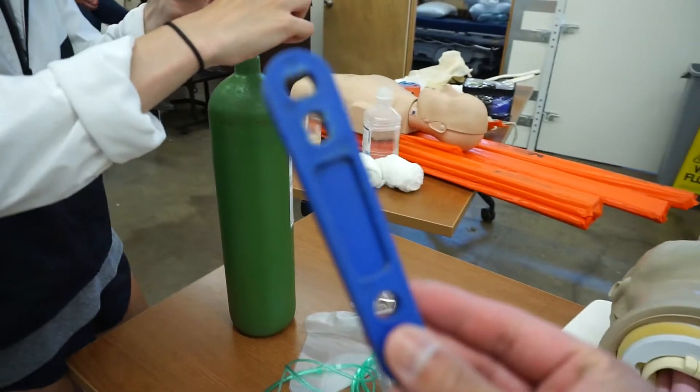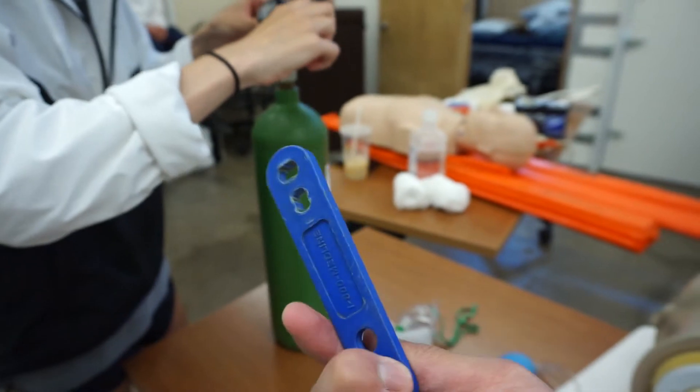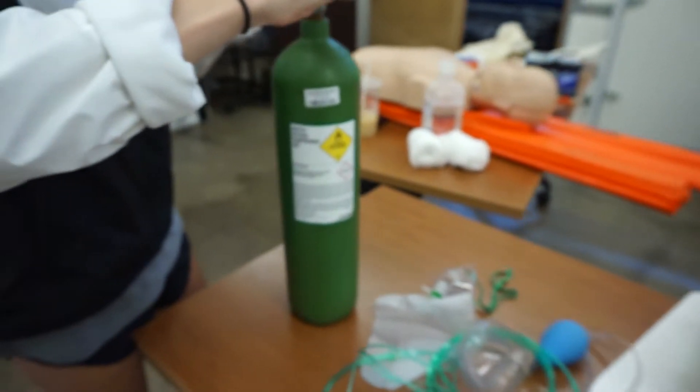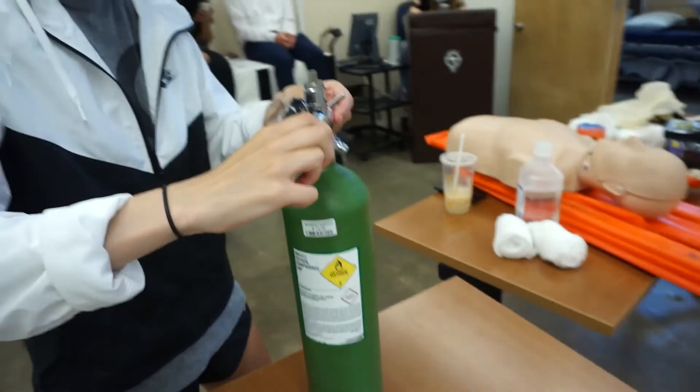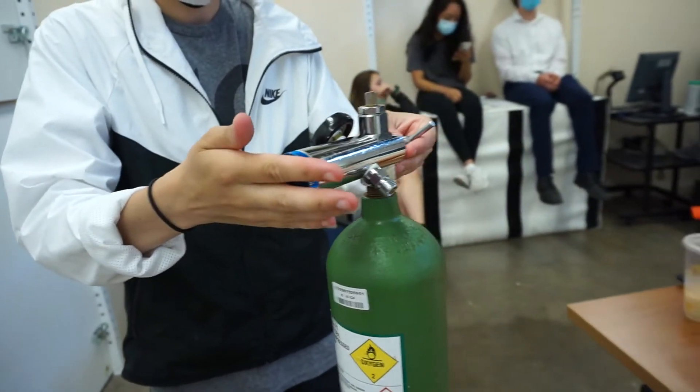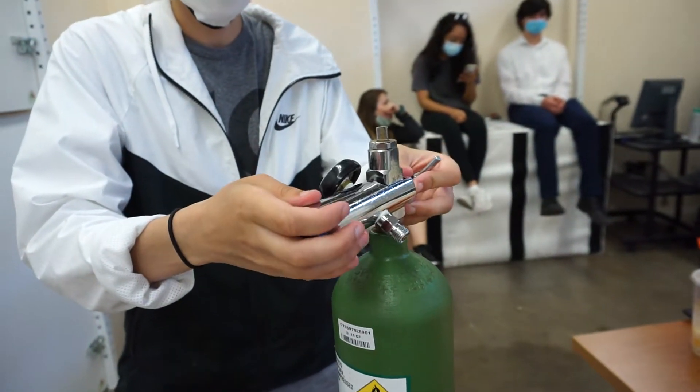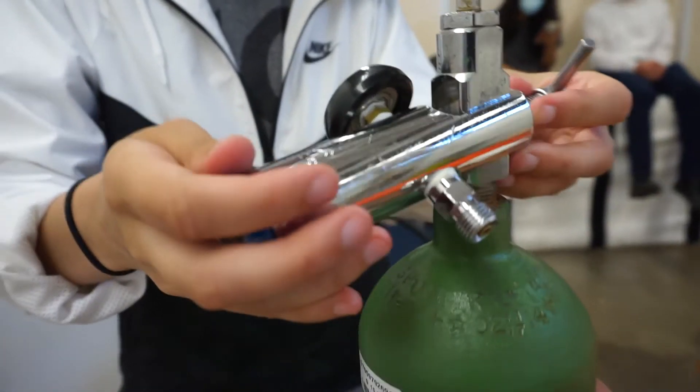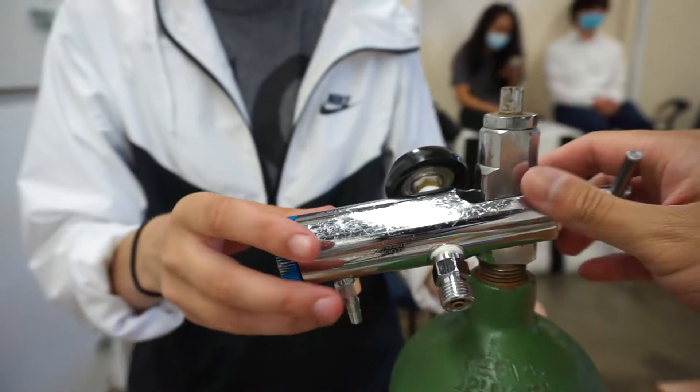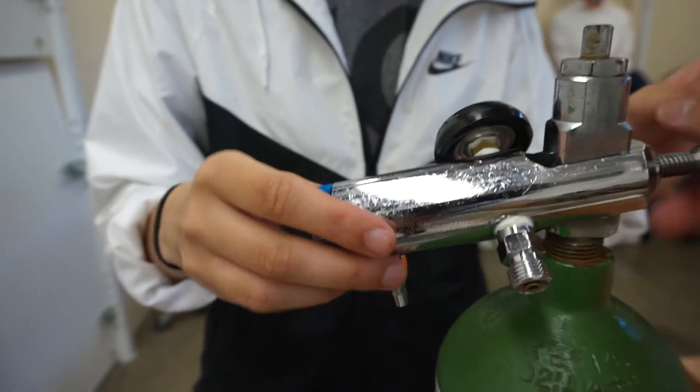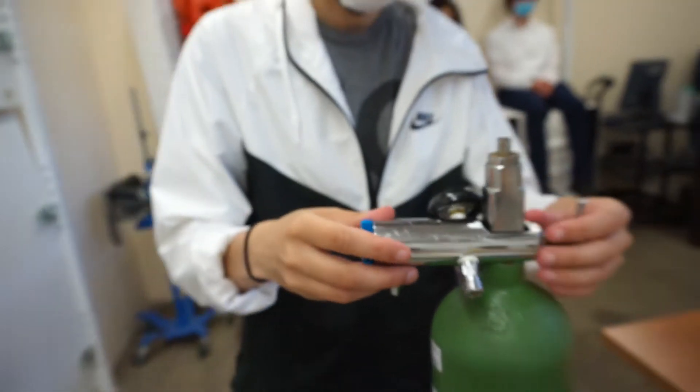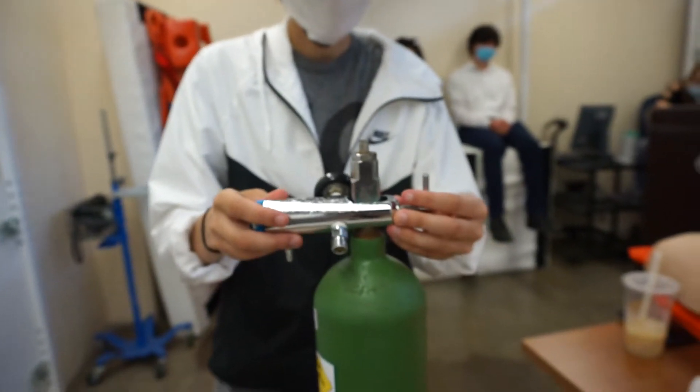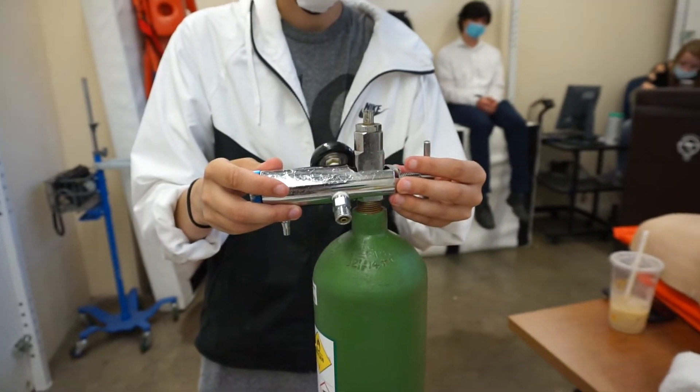And then the third piece of equipment you'll need is going to be an O2 key. Alright, so just by looking at it, sometimes it's crooked, sometimes it's too low, and you think it's right. And if you were to continue tightening this and then open the tank.